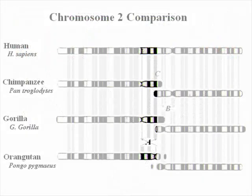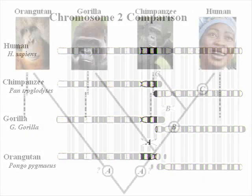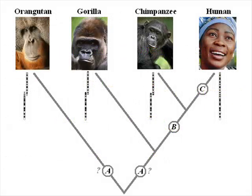The orangutan has a unique inversion on chromosome 2A, not shared with the other great apes. Which branch this mutation occurred on depends on whether the ancestral chromosome was more gorilla-like or more orangutan-like.